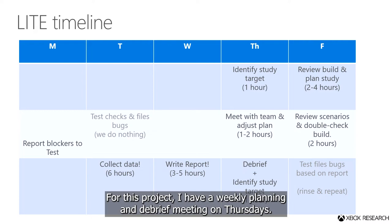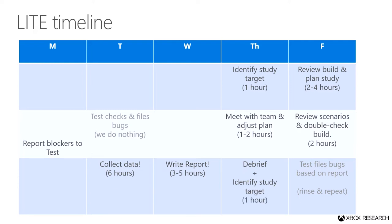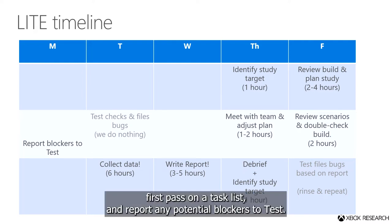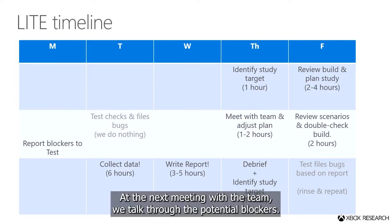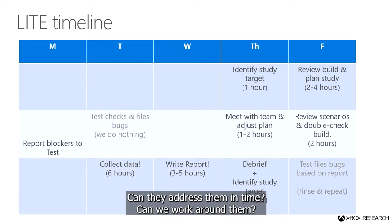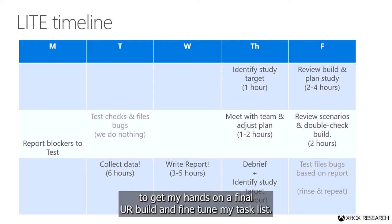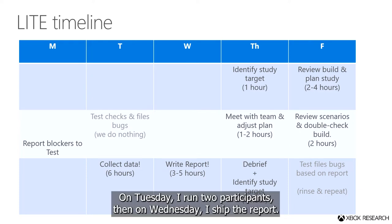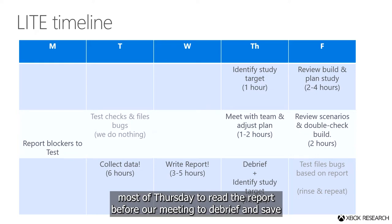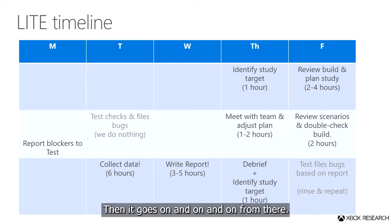For this project, I have a weekly planning and debrief meeting on Thursdays. A LIGHT cycle starts with a meeting to identify the topic for the next study. After that, I have two days to review the build, figure out a rough first pass on a task list, and report any potential blockers to test. Test has two days to repro my issues and file bugs. At the next meeting with the team, we talk through the potential blockers — can they address them in time? Can we work around them? If not, we can hammer out a backup plan. Then I have two days to get my hands on a final UR build and fine-tune my task list. On Tuesday, I run two participants. Then on Wednesday, I ship the report. That gives the team most of Thursday to read the report before a meeting to debrief, and save 10 to 15 minutes at the end to talk about the topic for the next study. Then it goes on and on from there.